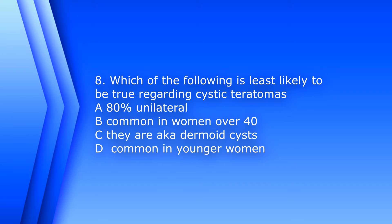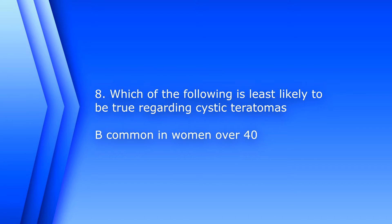Number 8. Which of the following is least likely to be true regarding cystic teratomas? A. 80% are unilateral. B. It's common in women over 40. C. They are also known as dermoid cysts. Or D. They are common in younger women. They are dermoid cysts, 80% of them usually are unilateral, and they are much more common in younger women. So the answer is B — common in women over 40 would not be likely.